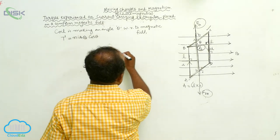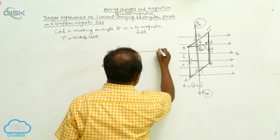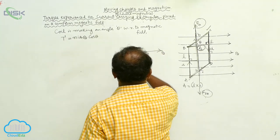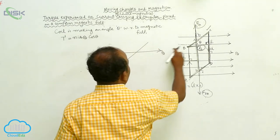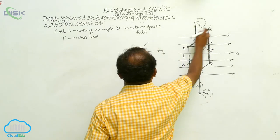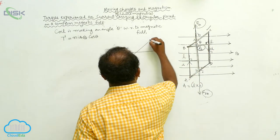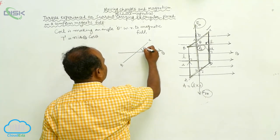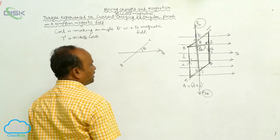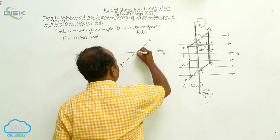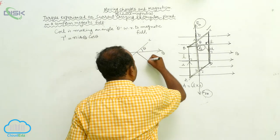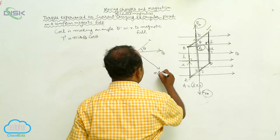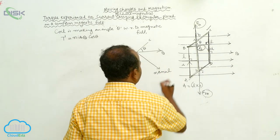Now this is the magnetic field B, and this is the coil BC, making an angle theta. For the coil, let us draw a normal.